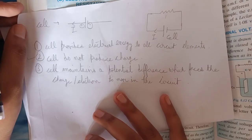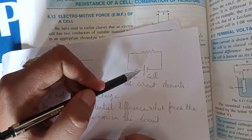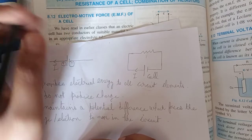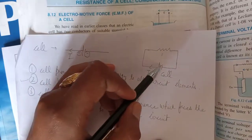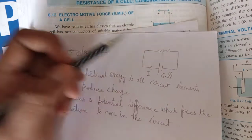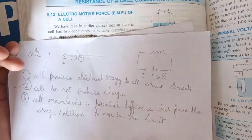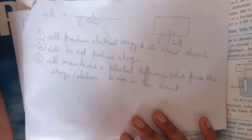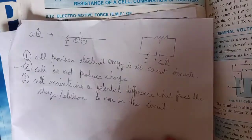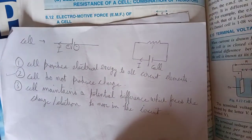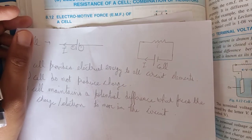What does the cell do? It provides electrical energy to all the circuit elements. The cell maintains a potential difference which forces the electrons to move in the circuit. How will it maintain that potential difference? It forces electrons to move through the resistance, capacitor, and whatever circuit elements you have, then back to the cell. So the cell maintains the potential difference in the circuit.